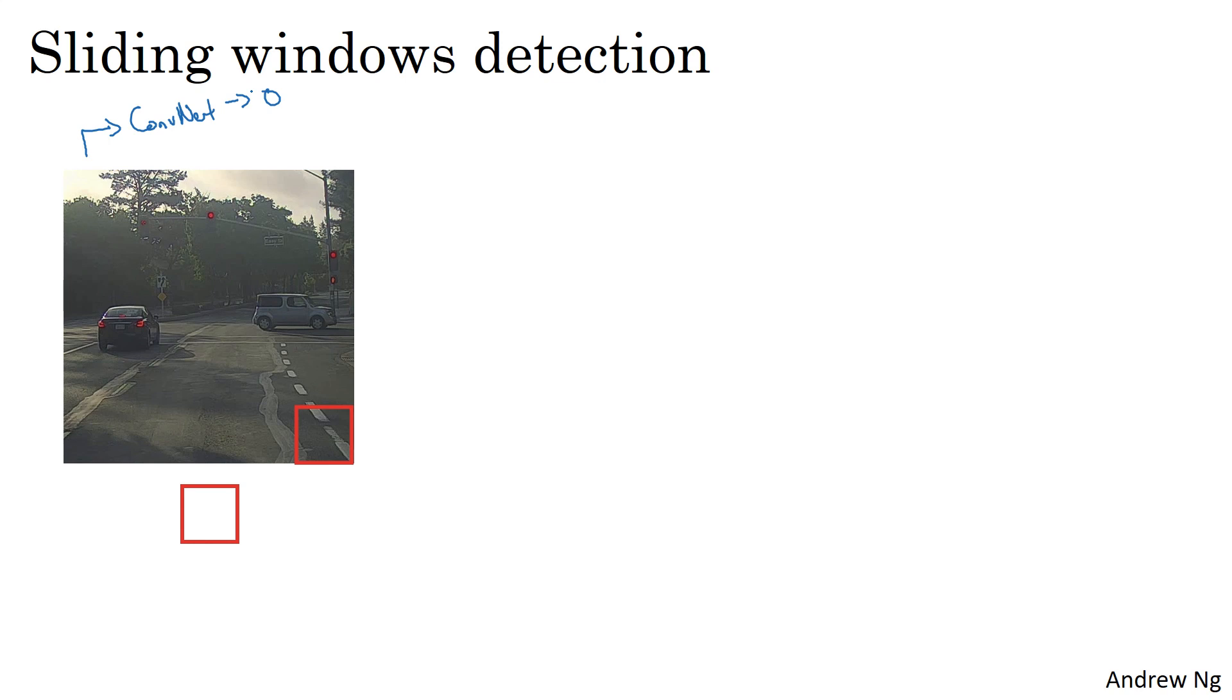I'm using a pretty large stride in this example just to make the animation go faster. But the idea is you basically go through every region of this size, and pass lots of little cropped images into the ConvNet, and have it classify 0 or 1 for each position at some stride.